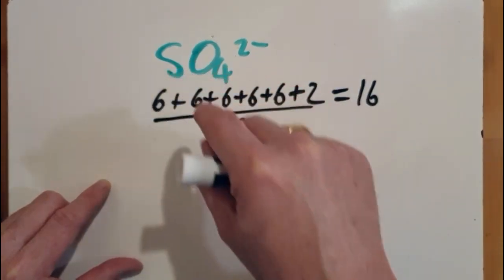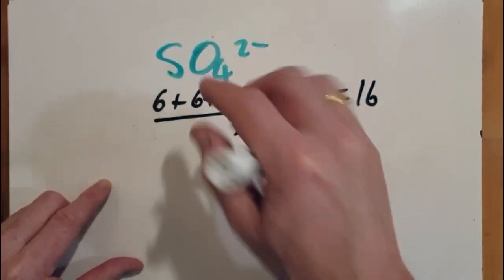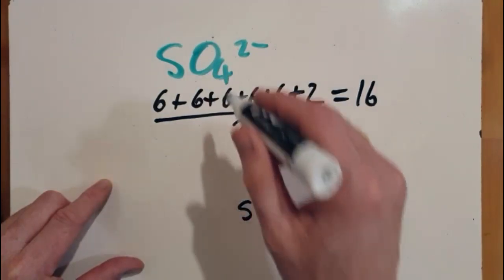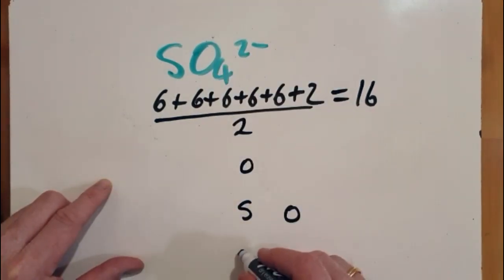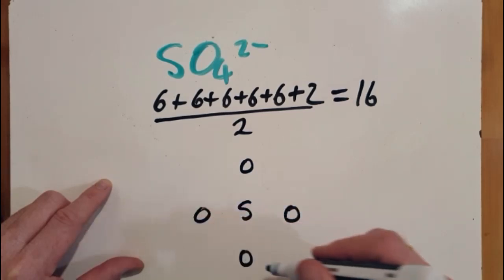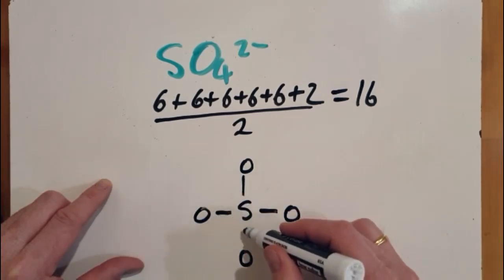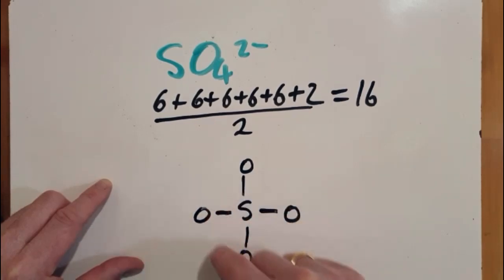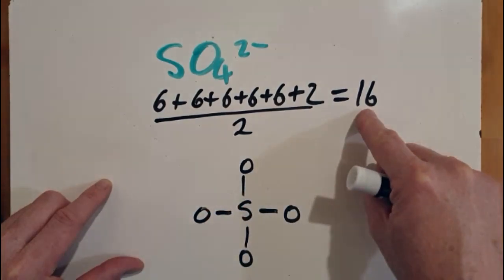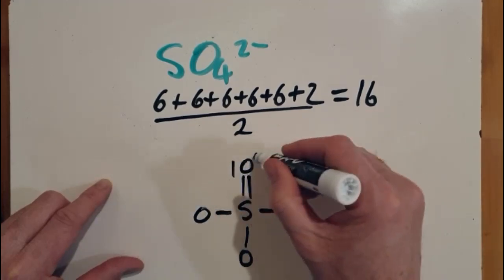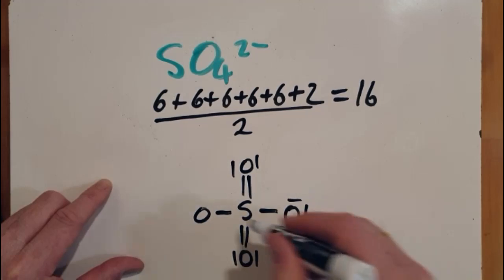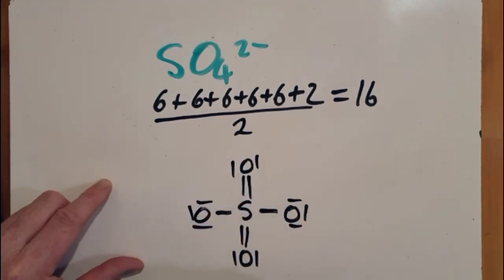Sulfur goes in the middle, the first atom of the formula almost always goes in the middle, and spread the others around evenly. So join them up to make one molecule. That seems straightforward. So I've dealt with four pairs of electrons, 16 in total, so I've got 12 more to distribute. So there we are, 16 electron pairs.